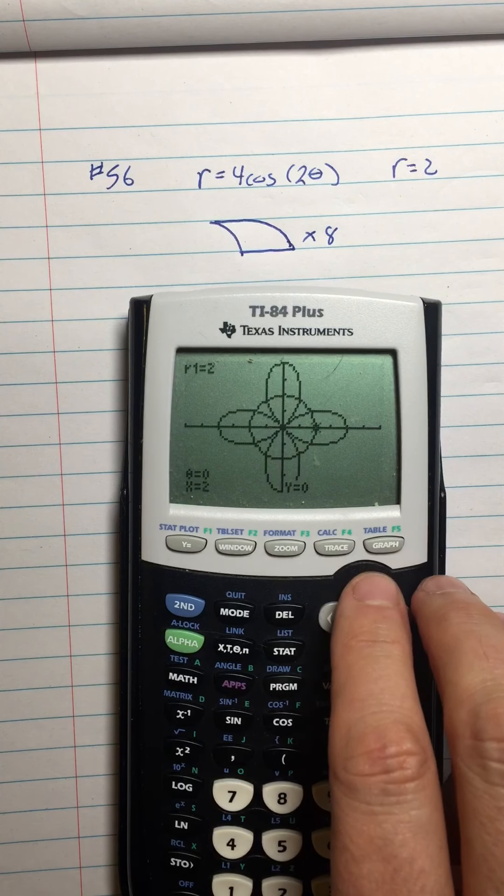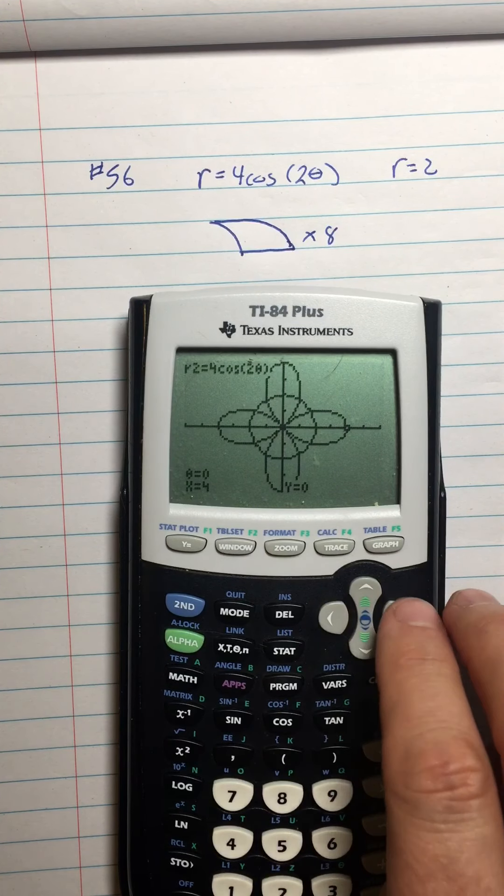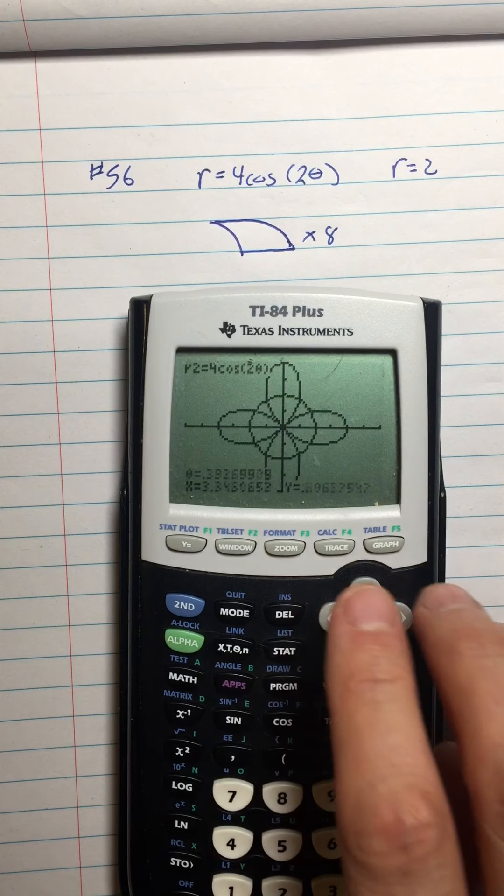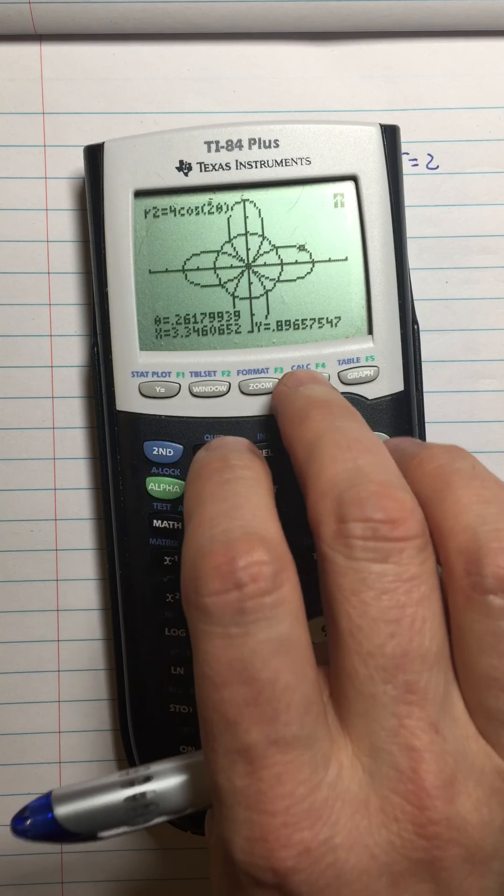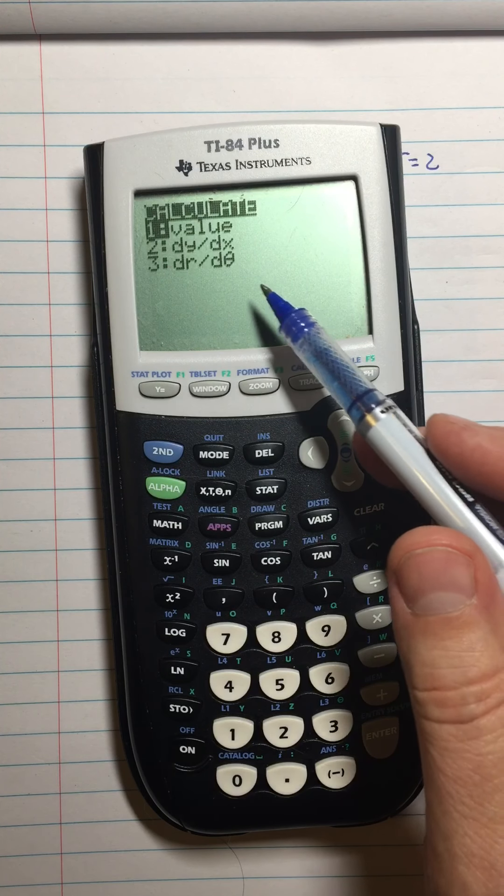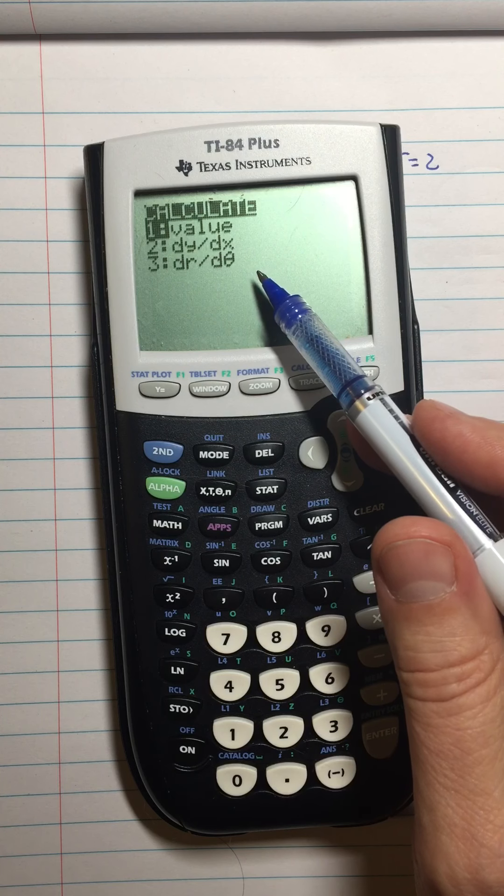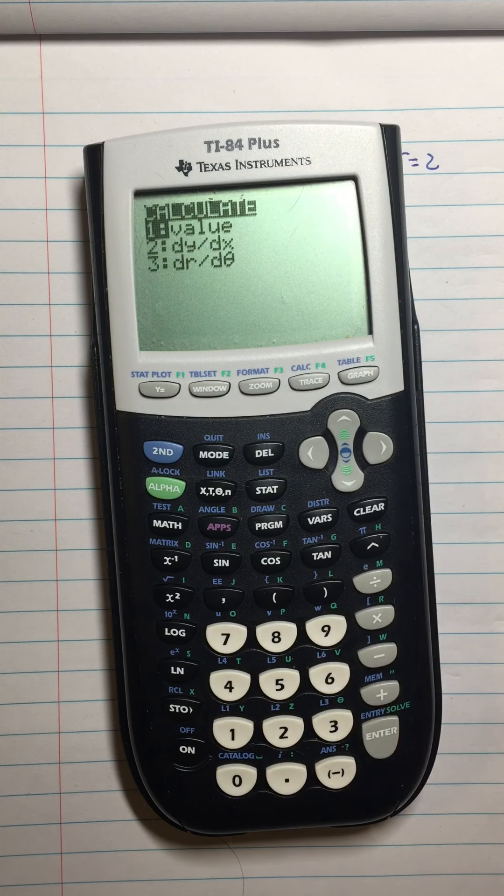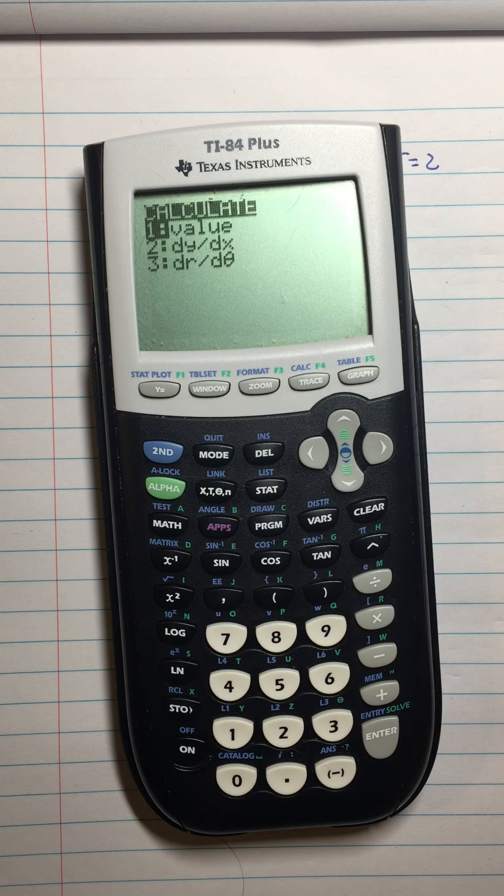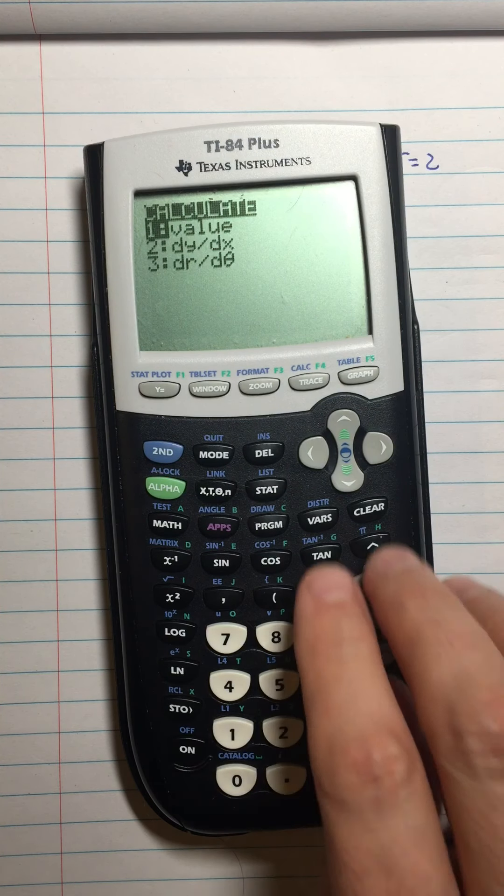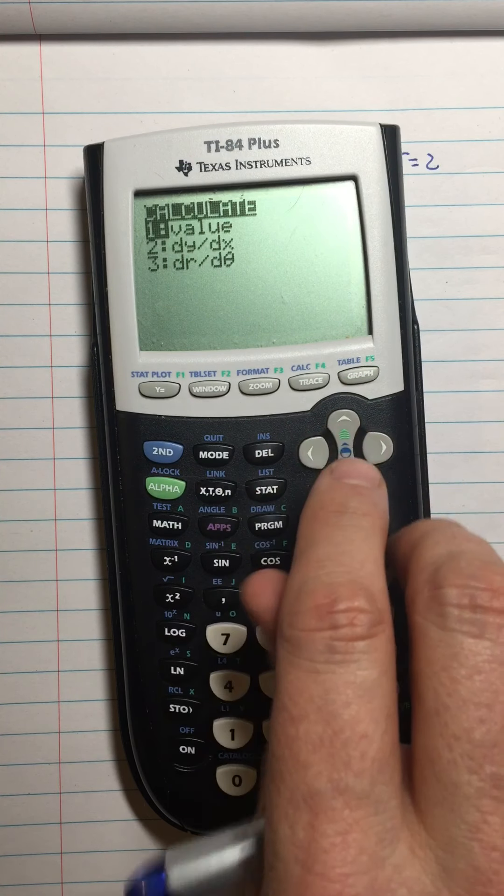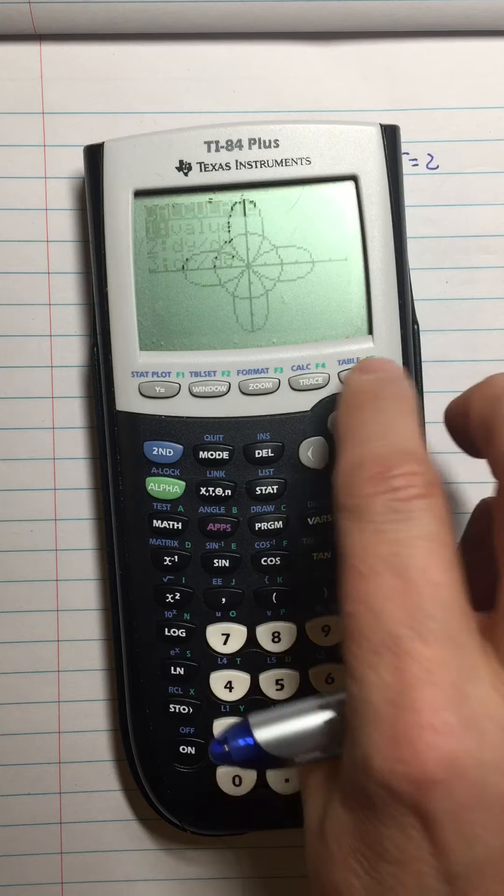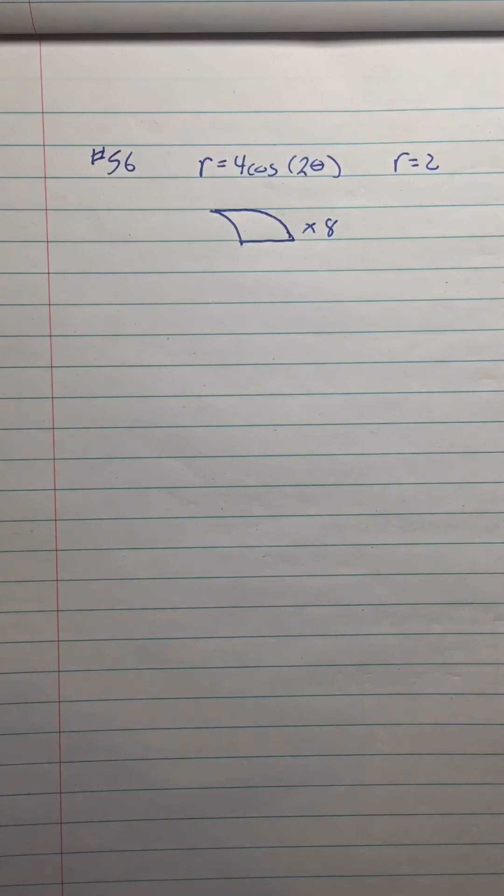Here's a fun thing that I learned about the calculator today. When you're in polar mode, you would like to calculate the intersection between those two functions, right? I go second calc and it can find dy/dx for you, but it cannot find the intersection. It doesn't have that program. Maybe one of you will write the program that will modify the TIs so that we can get our intersects.